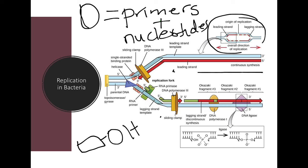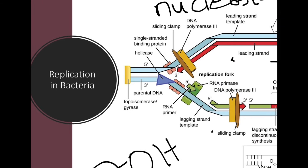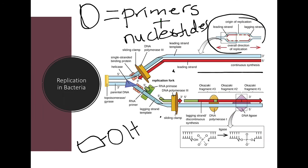The leading strand looks pretty smooth, whereas the lagging strand looks like it's having a harder time — but at the end of the day, they both work. In bacteria, there are particular types of topoisomerases that are present. Since bacterial DNA is circular and coiled — we call that supercoiling — topoisomerases play a role in unwinding or winding up the DNA depending on which type is present.